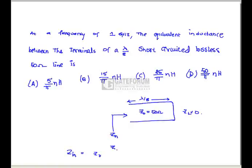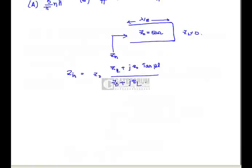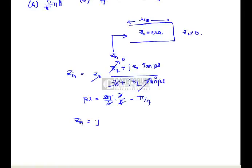Z_in equals Z0 times (ZL + jZ0·tan(βL)) / (Z0 + jZL·tan(βL)). Since ZL equals 0, and βL = (2π/λ) × (λ/8) = π/4, the ZL terms go to zero and cancel, giving Z_in = jZ0 = j50 Ω. The input impedance is inductive.